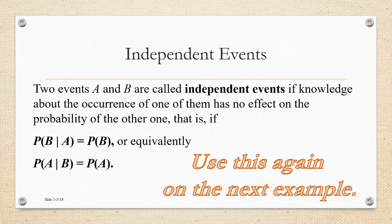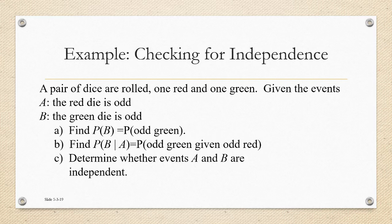So again, two events A and B are called independent events if knowledge about the occurrence of one of them has no effect on the probability of the other one happening. We're going to use this same way of checking for independent events on the next example. This example is about a pair of dice — one red and one green. Event A is the event that the red die is odd, and event B is the event that the green die is odd. We have to find the probability of B and the probability of B given A.